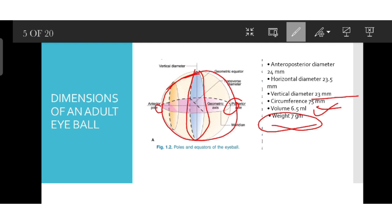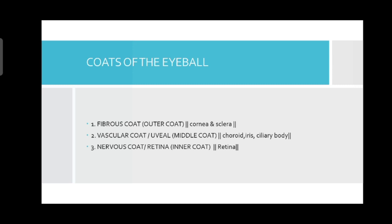Let's move on to the various coats of the eyeball. The eyeball has three coats: number one, the fibrous coat or outer coat, consisting of cornea and sclera; number two, the vascular coat, uveal coat, or middle coat, consisting of choroid, iris, and ciliary body; and number three, the nervous coat or inner coat, which is the retina.